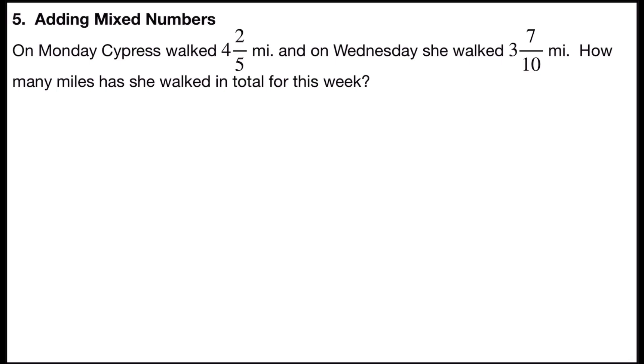Problem number five is adding mixed numbers. It says on Monday, Cypress walked four and two-fifths miles, and on Wednesday, she walked three and seven-tenths miles. How many miles has she walked in total for this week?